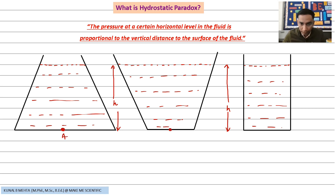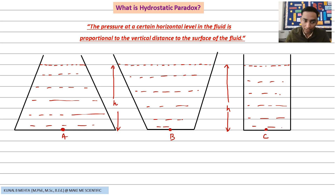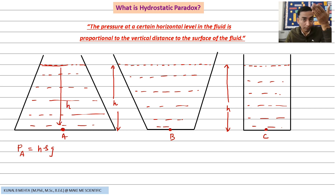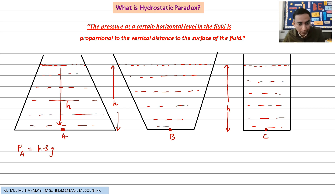Now let's calculate the pressure at point A, point B, and point C — at the bottom of these three vessels. The answer is the same. P_A = hρg, where h is the depth from the top surface to point A. That depth is the same in B and C, so h remains the same.